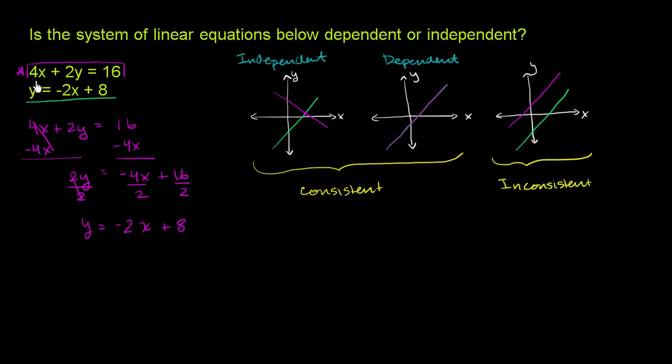So all I did is algebraically manipulated this top equation up here. And when I did that, when I solved essentially for y, I got this right over here, which is the exact same thing as the second equation. We have the exact same slope, negative 2, and we have the exact same y-intercept, 8 and 8.